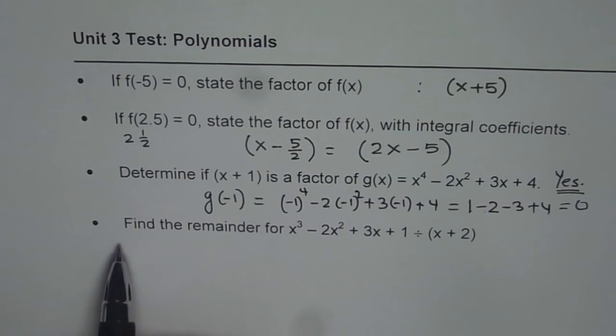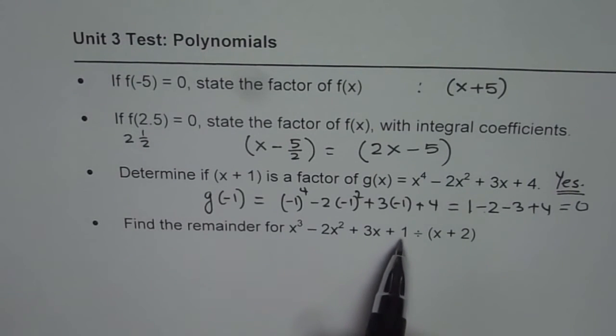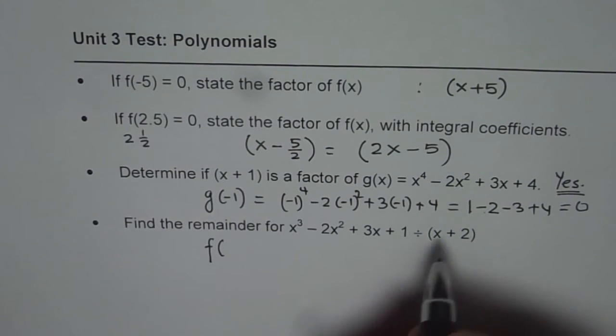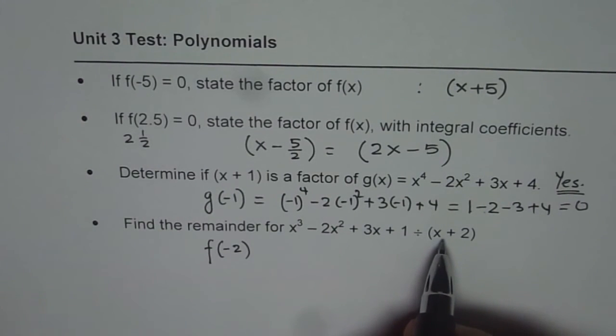Now, the question is, find the remainder for x^3 - 2x^2 + 3x + 1 divided by (x + 2). To find the remainder, what do you have to do? Substitute minus 2 in this case. The value which makes it 0.